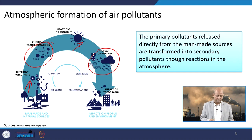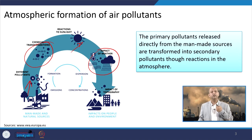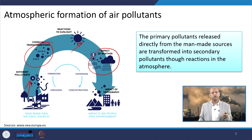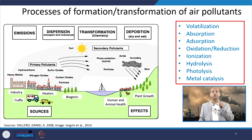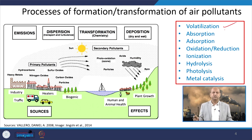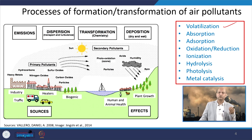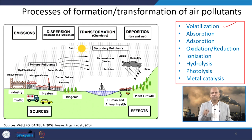Ultimately they get attached to the surfaces of buildings, or we inhale them — animals inhale them — they become part of the ecosystem and water bodies everywhere. The processes of formation and transformation of air pollutants can be listed as: volatilization, absorption, adsorption, oxidation-reduction process, ionization, hydrolysis, photolysis, or metal catalysis — all these things happen in the atmosphere. We will see those processes.